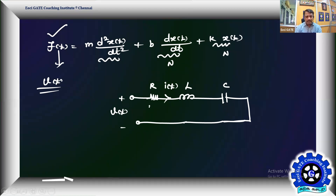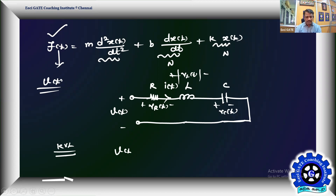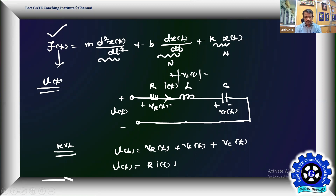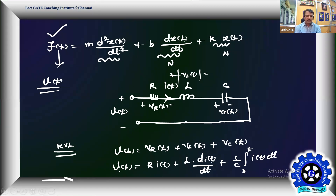For the series RLC circuit, referring to KVL, there is voltage across resistor V_R(t), voltage across inductor V_L(t), and voltage across capacitor V_C(t). The voltage balance equation gives V(t) = V_R + V_L + V_C. So V(t) = R·i(t) + L·(di/dt) + (1/C)·∫i(t)dt, assuming no initial current in the inductor and no initial charge across the capacitor.